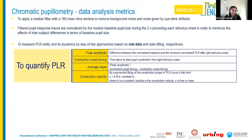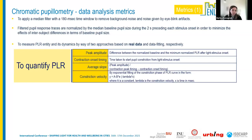Our data approach applies a median filter to remove background noise and blink artifacts. The filtered pupil response traces are normalized by the median baseline pupil size to minimize effects of biological inter-subject differences. We can then measure PLR magnitude and dynamics through two approaches: one based on real data — calculating parameters like peak amplitude, contraction onset timing, and average slope — and a second based on data fitting, estimating parameters like constriction velocity.